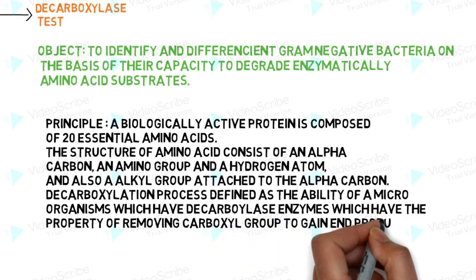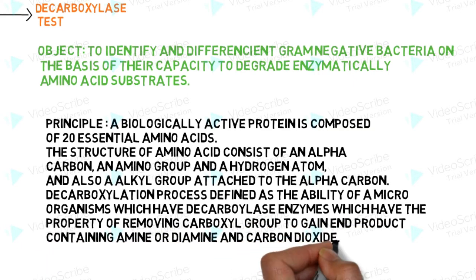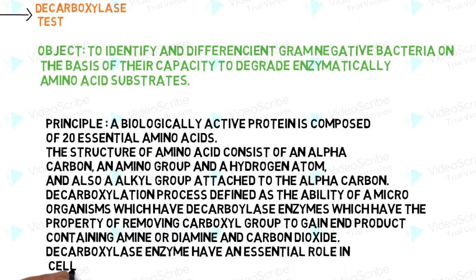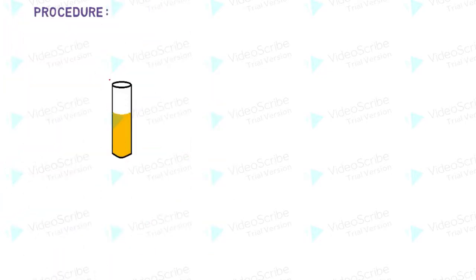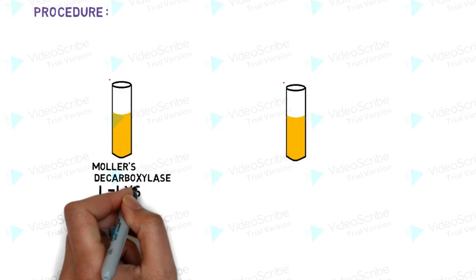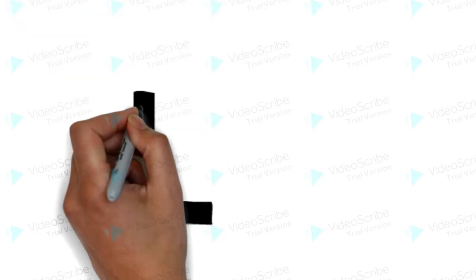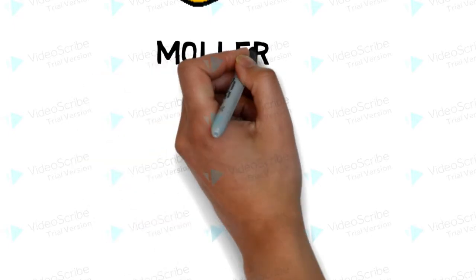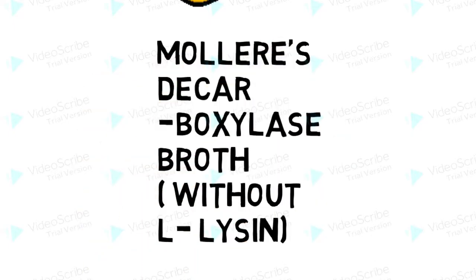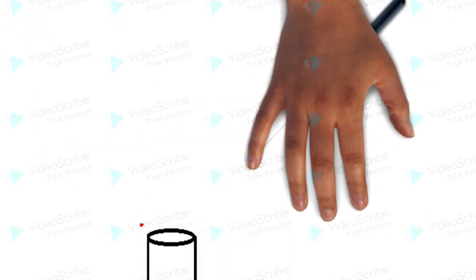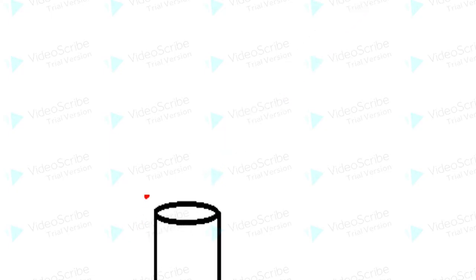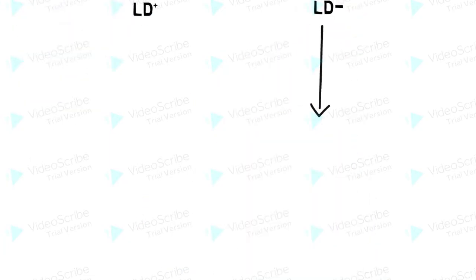Procedure: take a test tube containing molar decarboxylase agar media with L-lysine, marked as LD plus, and a molar decarboxylase broth without L-lysine, marked as LD minus. Inoculate with the specific organism and add 1 ml of mineral oil to each test tube.